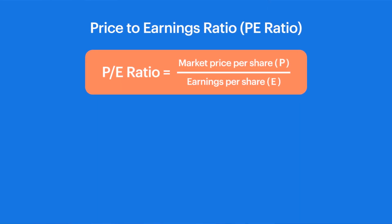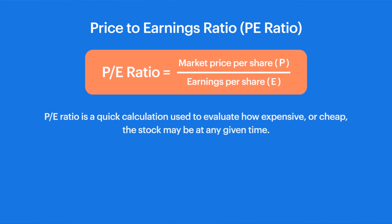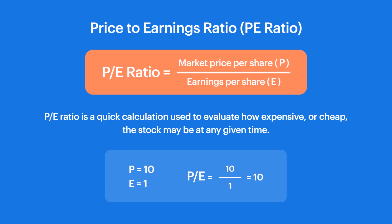P-E ratio is a valuation ratio — the most widely used ratio. P-E ratio is calculated as the price of a stock divided by its earnings per share. For a quick example, if a stock's price is 10 rupees and its last reported earnings are 1 rupee per share, then P by E becomes 10 by 1, which is 10.